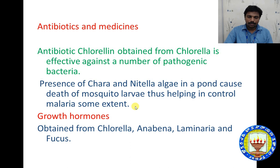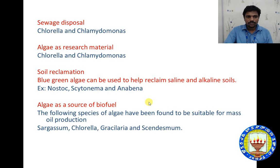Some vitamins and enzymes are also obtained from algae members. The antibiotic chlorellin, obtained from Chlorella, is effective against a number of pathogenic bacteria. Algae in ponds cause the death of mosquito larvae, thus helping to control malaria to some extent. Growth hormones — auxins, gibberellins, and cytokinins — are obtained from Chlorella, Anabaena, Laminaria, and Fucus. Chlorella and Chlamydomonas species are used as very good research material. Blue-green algae can help reclaim soil from alkaline salinity — for example, Nostoc, Scytonema, and Anabaena. Algae are a source of biofuel; Sargassum, Chlorella, and Gracilaria are used for sustainable mass oil production.